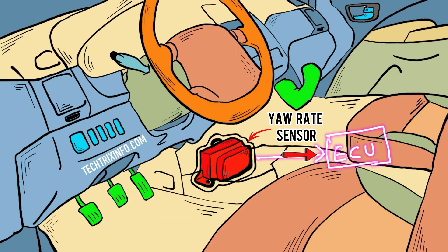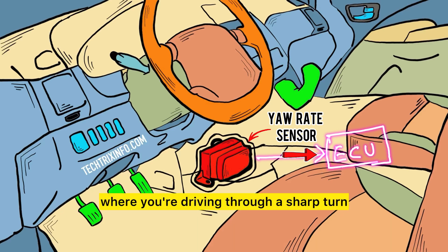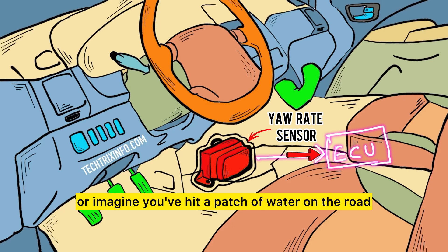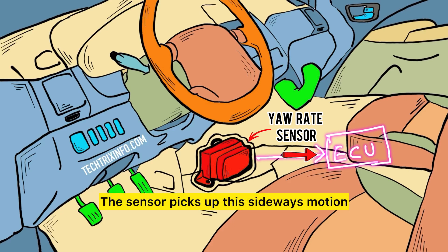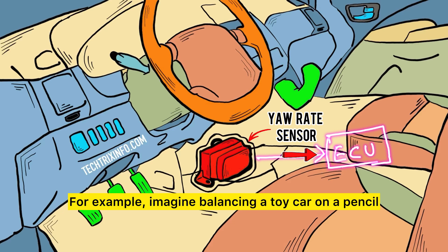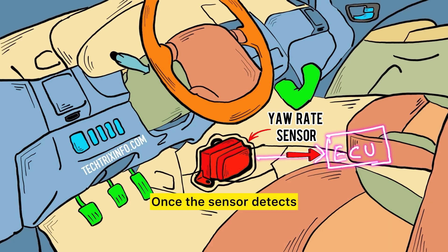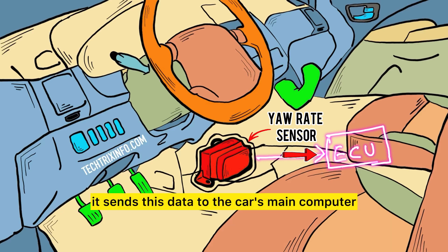Here's how it works step by step. The yaw rate sensor is constantly checking if your car is rotating around its vertical axis. Think of a situation where you're driving through a sharp turn, or imagine you've hit a patch of water on the road, causing your car to start skidding. The sensor picks up this sideways motion or the car's spin and measures how fast it's turning — this movement is called yaw. For example, imagine balancing a toy car on a pencil: if you spin the toy car left or right, that's the yaw movement. The yaw rate sensor tracks how quickly this movement happens. Once the sensor detects that the car is turning too quickly or starting to skid, it sends this data to the car's main computer, often called the Electronic Control Unit (ECU).